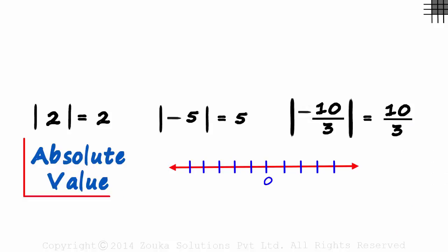On a number line, the absolute value tells us how far the number is from zero. 2 for example is 2 units away from zero. Minus 5 is 5 units away from the zero.